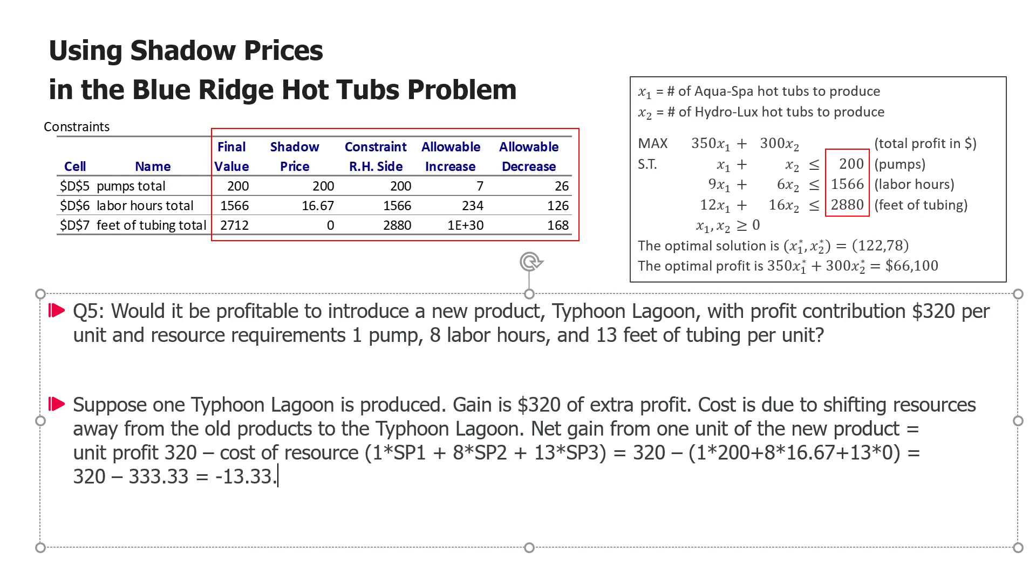So what does this tell us? What is the usefulness of this? Well the usefulness of this is that we have just determined that it is not profitable to produce a Typhoon Lagoon because the gain will be 320 dollars but taking resources from AquaSpa and HydroLux will cost us a loss of profit of 333 dollars. So the net effect will be actually a loss in profit and therefore we know if we were to add a third product here and resolve, this third product Typhoon Lagoon with the parameters as defined in this text, we would not be producing. So the optimal solution would be still 122.78 and then the third product variable optimal value would be zero.